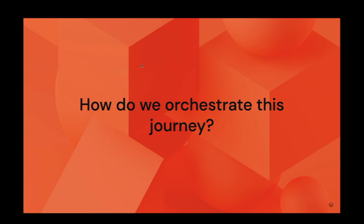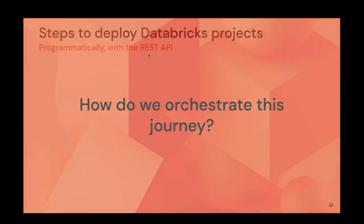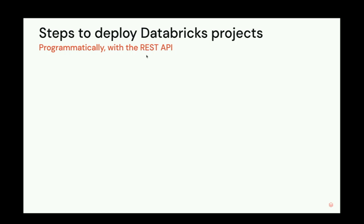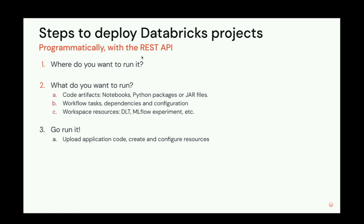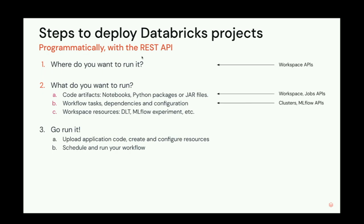Now we understand the way that it gets into production, but how do we orchestrate that? If we were to do this with the REST API, first we identify where and what we want to run — the code artifacts, the workflow tasks, the resources, everything we need. Then we upload the application code to the target workspace, create and configure all those resources, and then schedule and run it. To do this, you just need to familiarize yourself with all of the Databricks REST APIs — and then you should be totally fine.